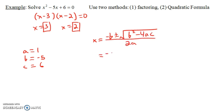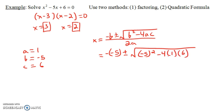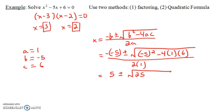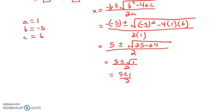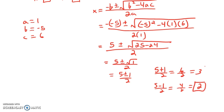Plugging in, we get x equals negative negative 5 plus or minus the square root of negative 5 squared minus 4 times 1 times 6, all over 2 times 1. Simplifying: negative negative 5 is 5, minus 5 squared is 25, and 4 times 1 times 6 is 24. So we get 5 plus or minus the square root of 1, all over 2, which is 5 plus or minus 1 over 2. That gives us 6 over 2 equals 3, and 4 over 2 equals 2.